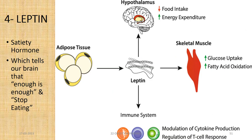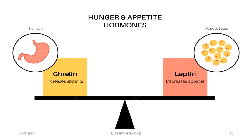The fourth important hormone is leptin. Leptin is a satiety hormone which gives the satisfaction sensation after food to the brain, telling it that enough is enough and to stop eating. Our aim should be to increase leptin as much as possible so that we don't overeat. To recap: ghrelin increases appetite and leptin decreases appetite.